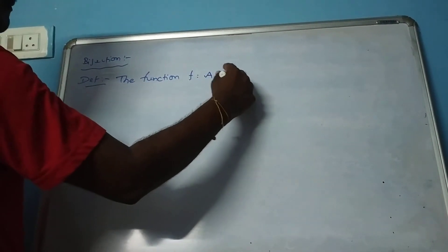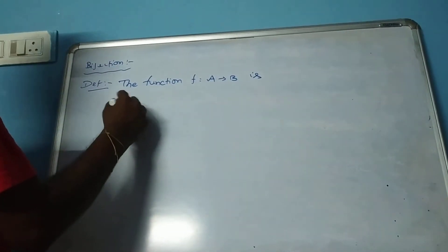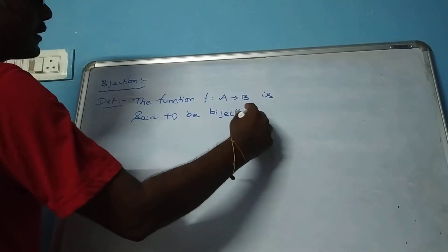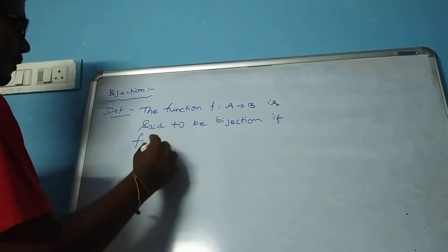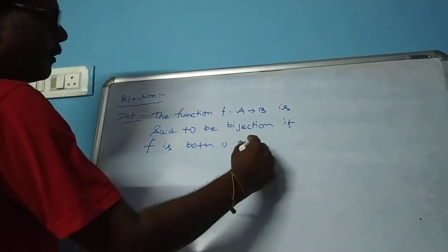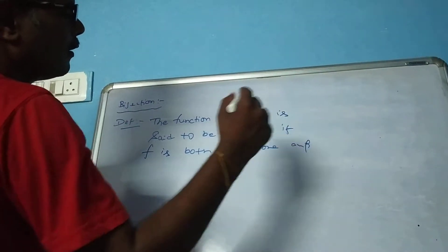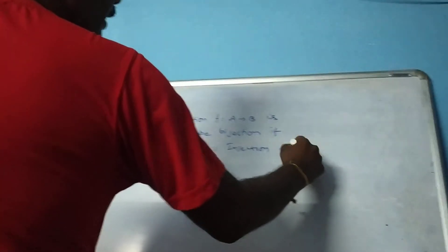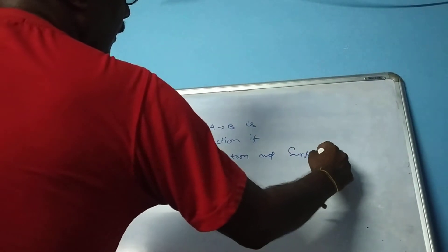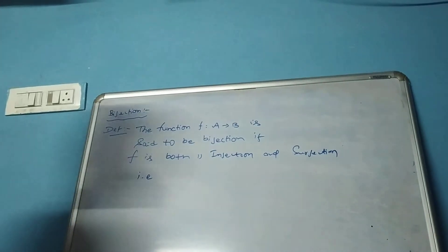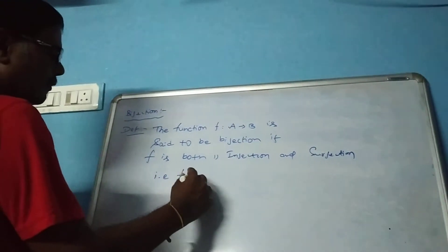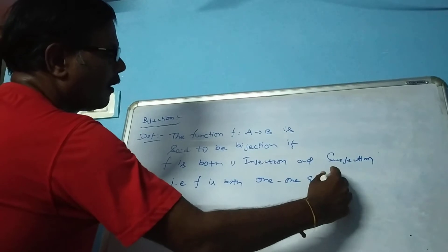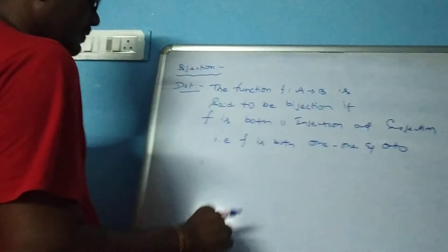F is a mapping from A to B and is said to be a bijection if F is both 1-1 (injection) and surjection.